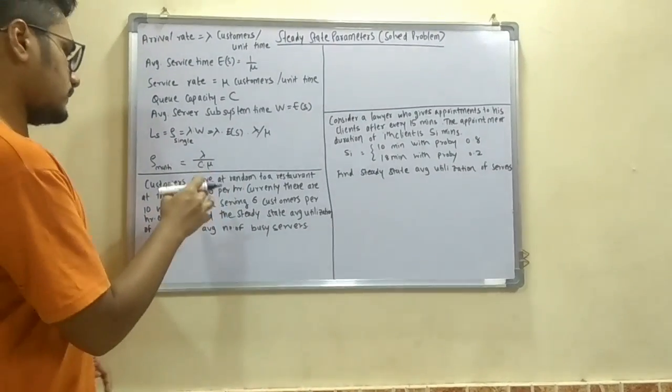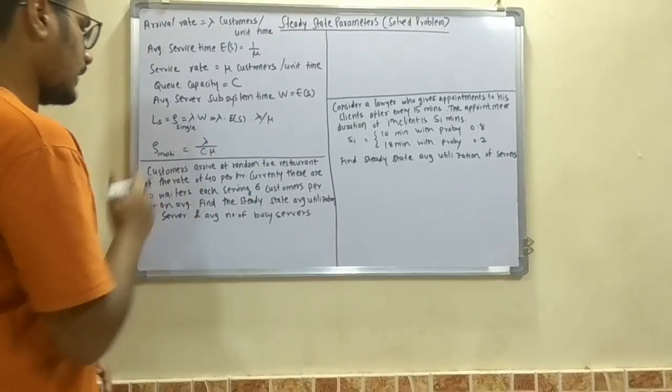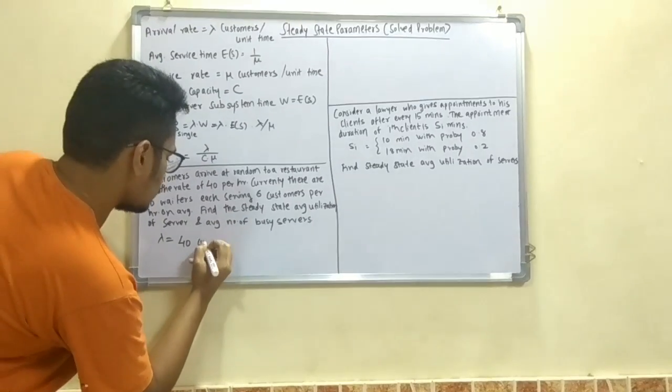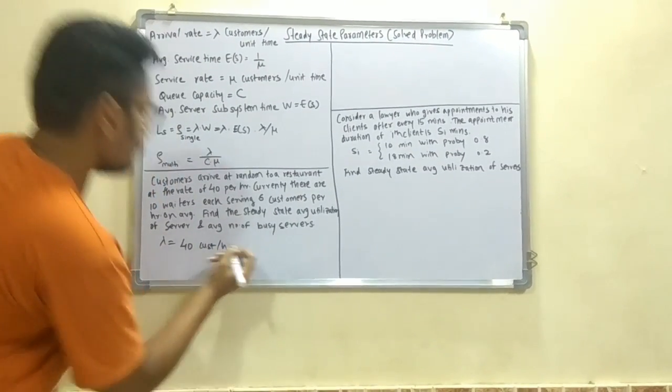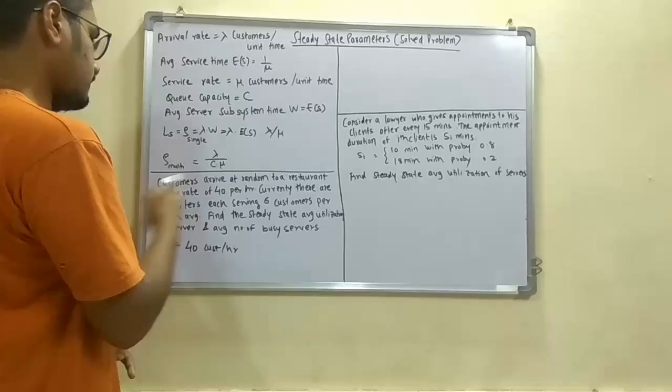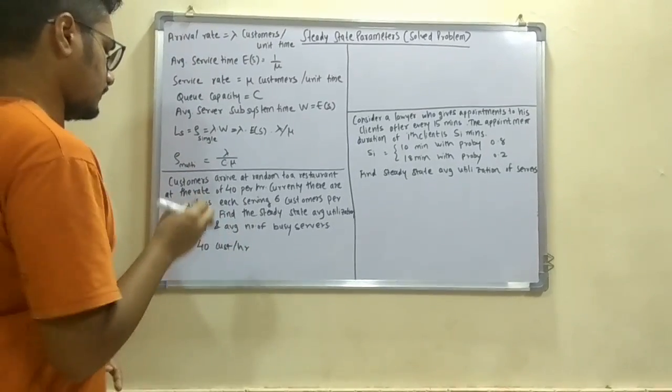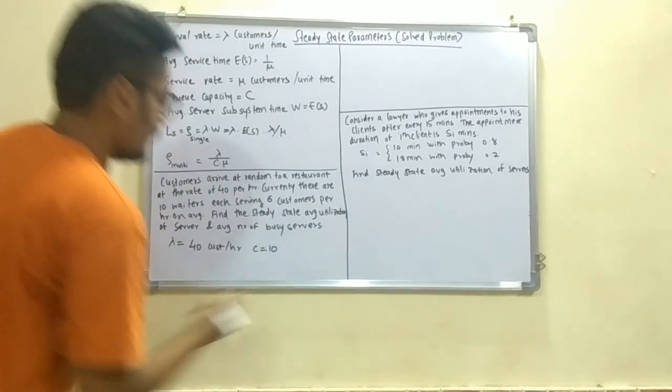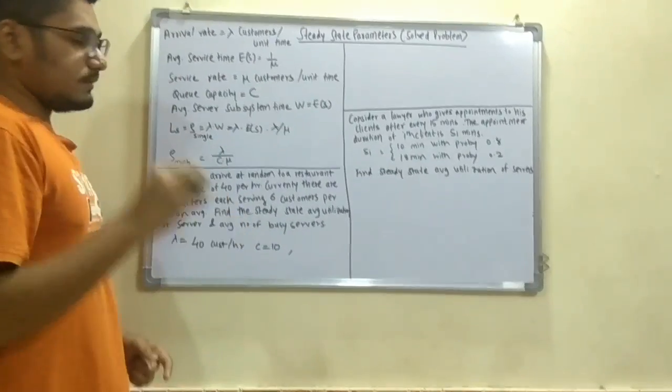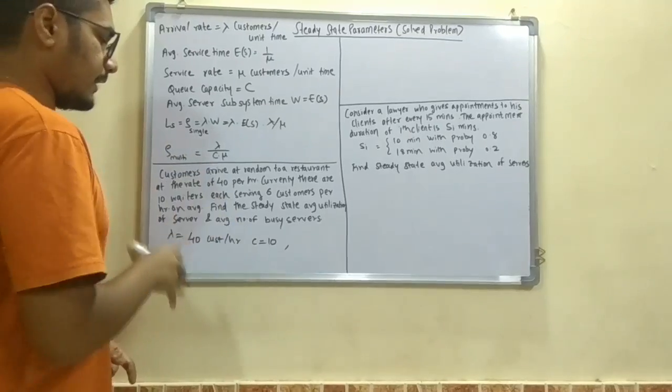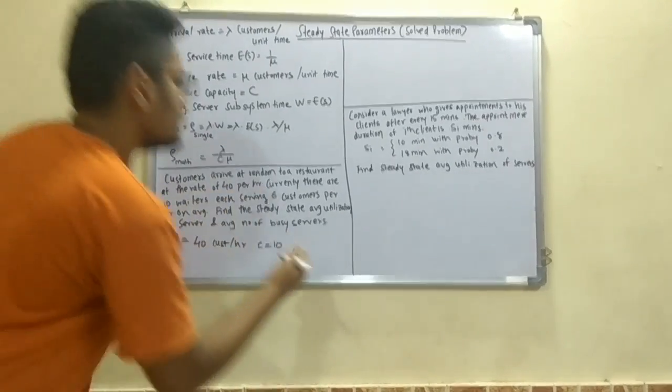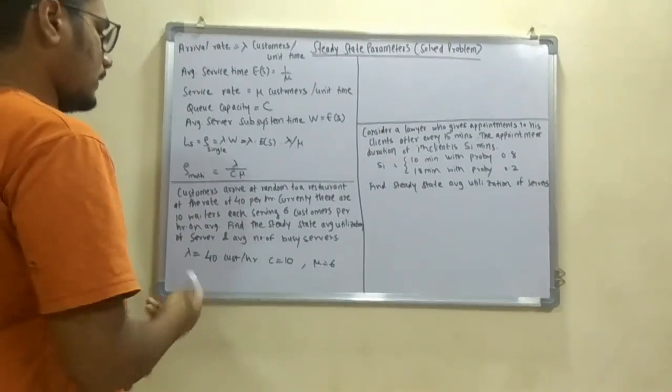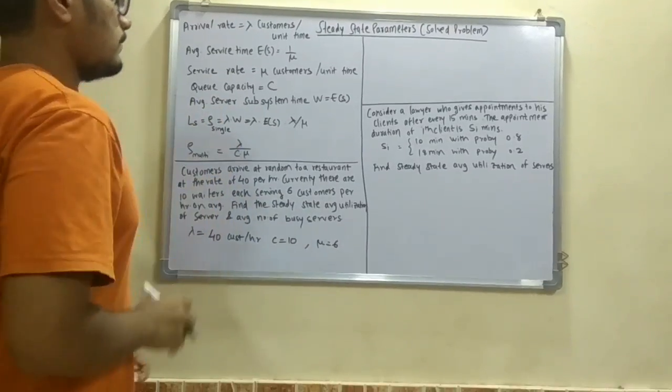So from this you have the arrival rate, that is lambda, so you have 40 customers per hour. Now there are 10 waiters in the system, so the capacity would be 10 waiters. This means that in the restaurant there are 10 waiters, that is the queue capacity, and each serving 6 customers, so mu will be 6 in this case.